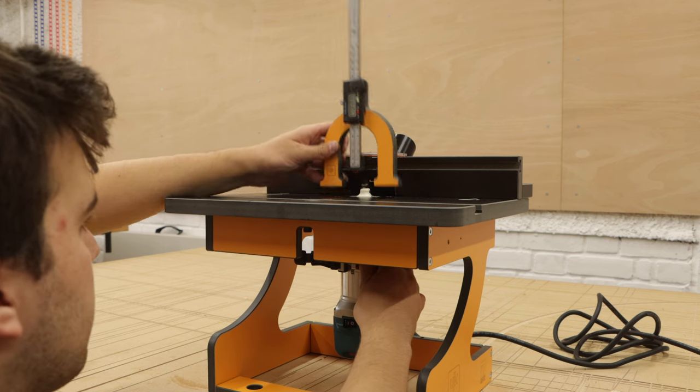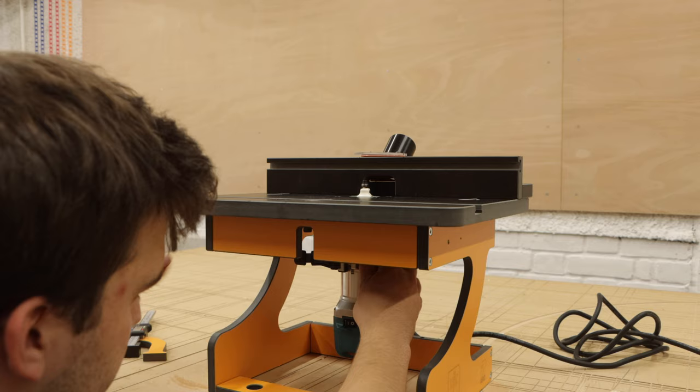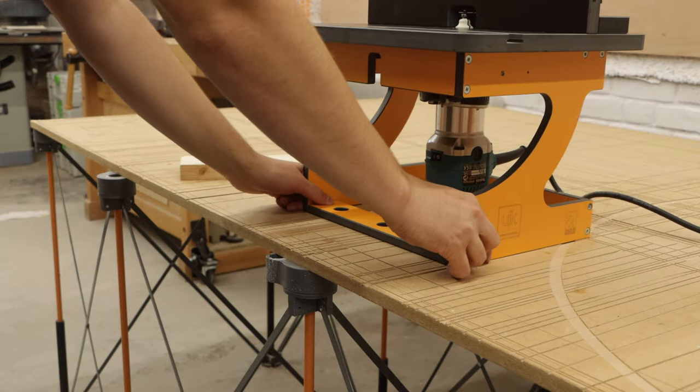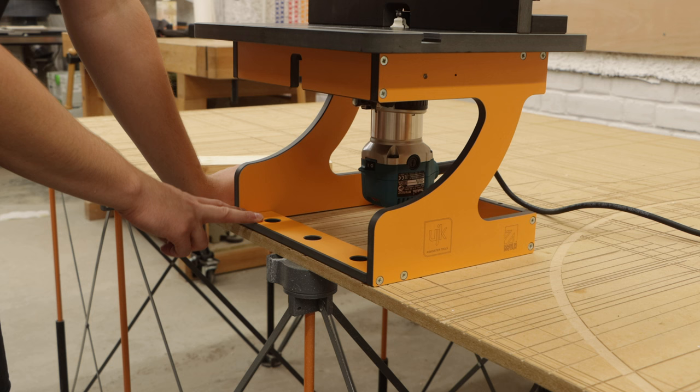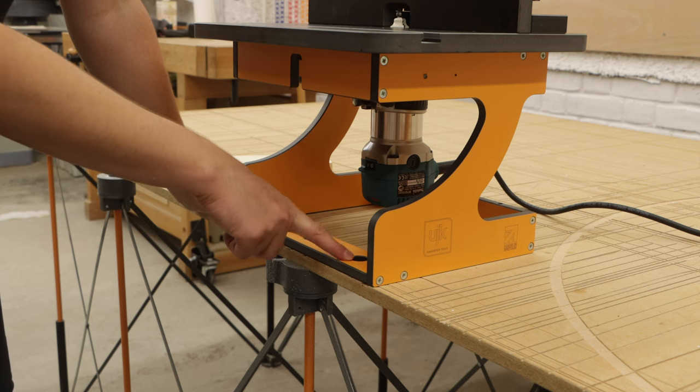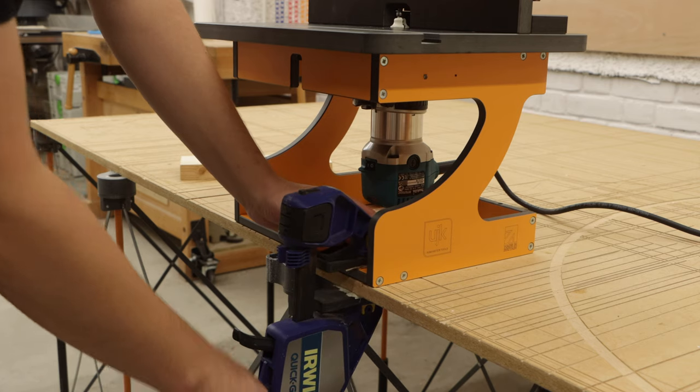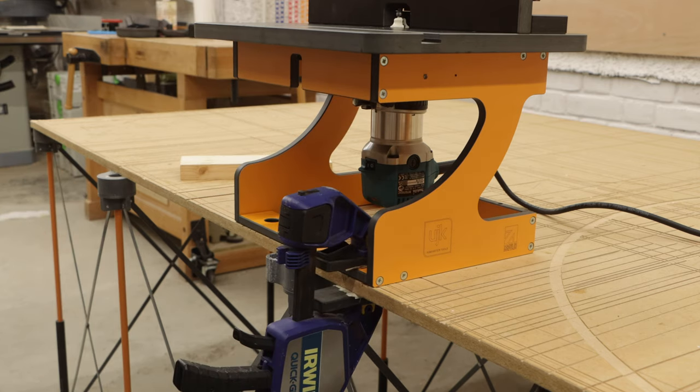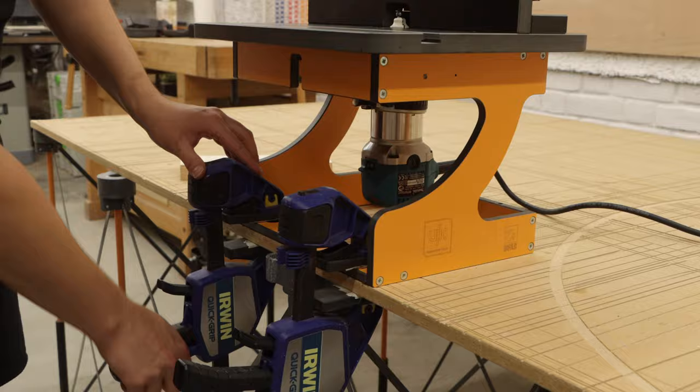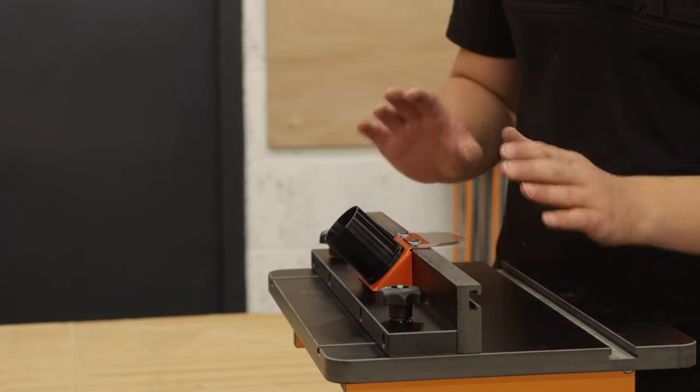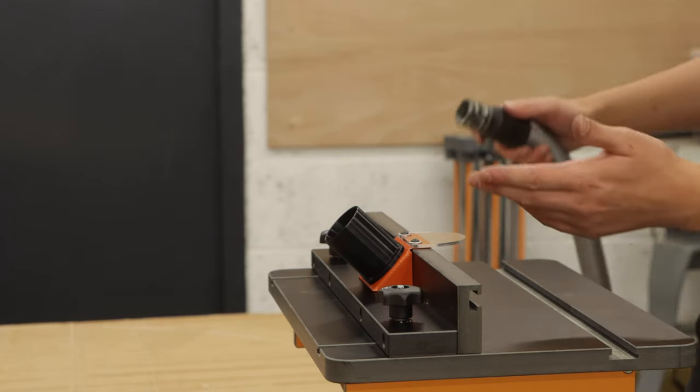So I'm happy with that, I'm going to lock that in place. Next I'm going to slide the router table forward. The base has this convenient flat area that can either be used with an MFT table or you can use a couple of clamps to secure the router table in place. Then you can set the fence in the right position and finally attach the dust hose.